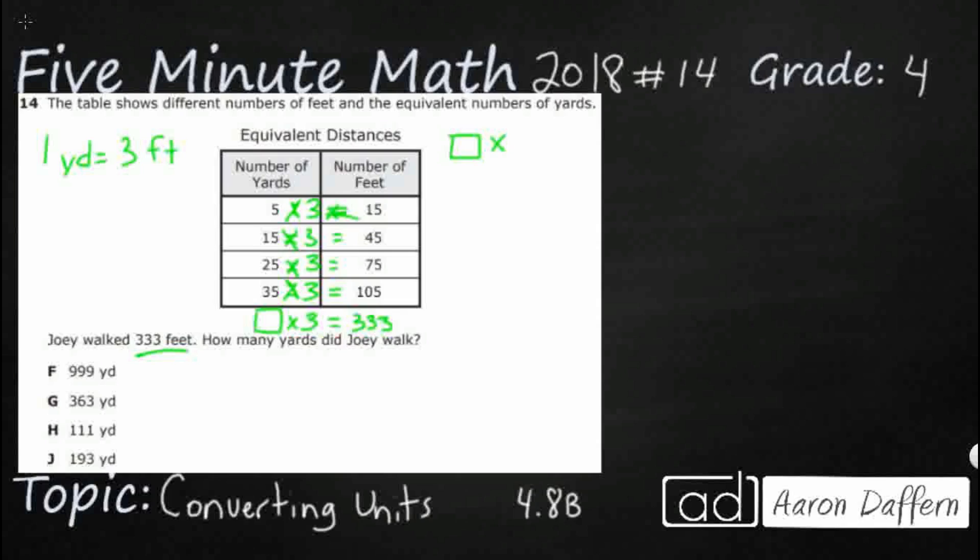So when we're thinking of fact families, we're thinking of something times three equals 333. We know that we can switch the order of our factors. That might help. You might have a clue, but there are also two related division sentences.